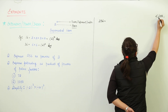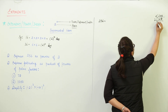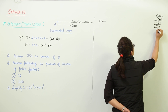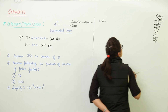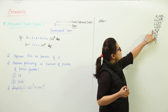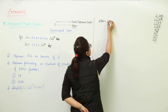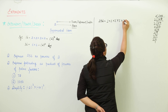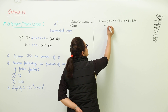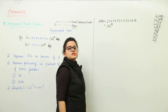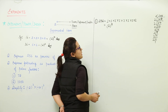We take out the factors of 2 by repeated division. This gives us 2 multiplied by itself 8 times — that is, 2 into 2 into 2 into 2 into 2 into 2 into 2 into 2. So the exponential notation of 256 is 2 raised to the power 8, which has base 2 and power 8.